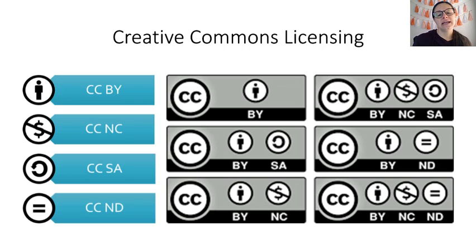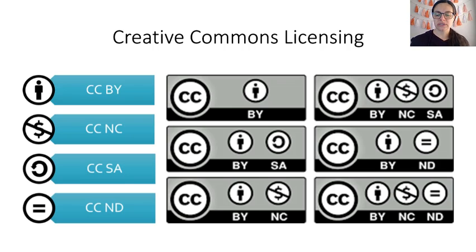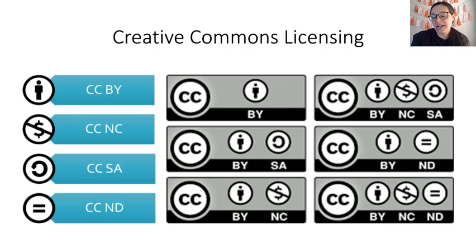CC ND means non-derivative — you cannot modify the material. You can reuse it, but you can't change it. You'll see any combination of these four symbols in different licenses. A lot of what you see will be CC BY NC, meaning you have to attribute the work and can't use it commercially — which in my mind is the best one for educational use because it keeps the integrity open. The most openly usable is CC BY, since it has the fewest restrictions.